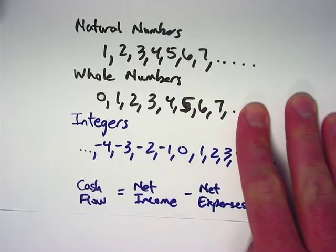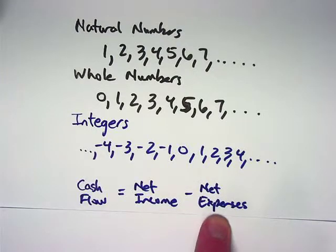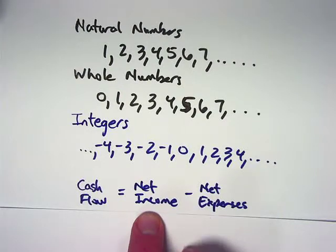And a basic application of negative numbers is cash flow. If you take your net income, after taxes, and subtract your net expenses, or you can just call it expenses. You can call that your cash flow. So it's convenient to treat it this way in all cases.